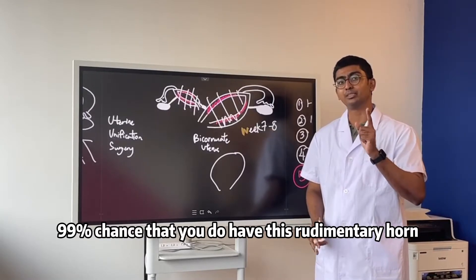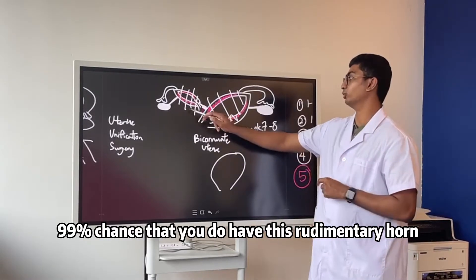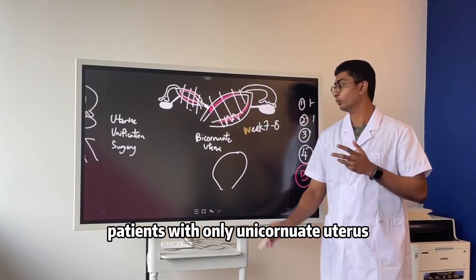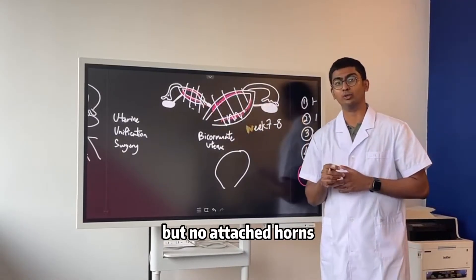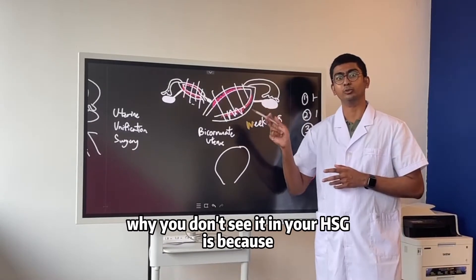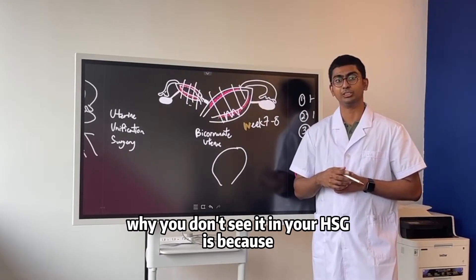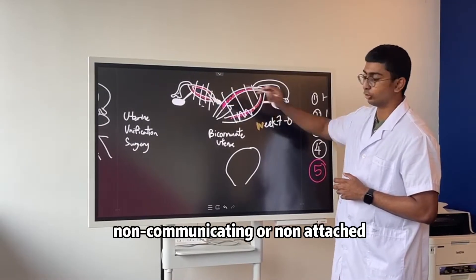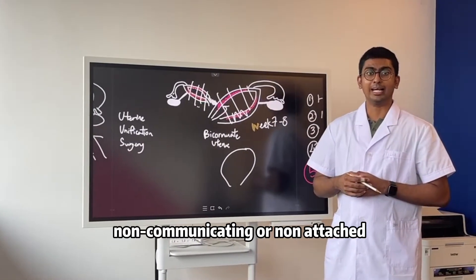Now don't worry, 99% chance that you do have this rudimentary horn. We have almost never observed patients with only unicornuate uterus but no attached horns. Why you don't see it during your HSG is because the dye is unable to enter into the uterine cavity due to it being non-communicating or non-attached.